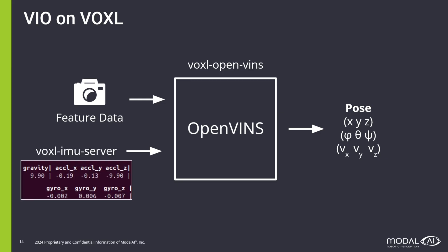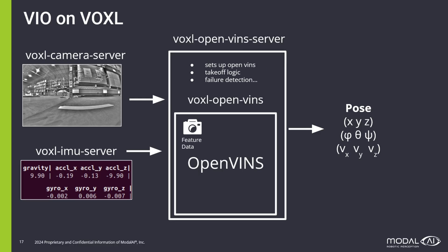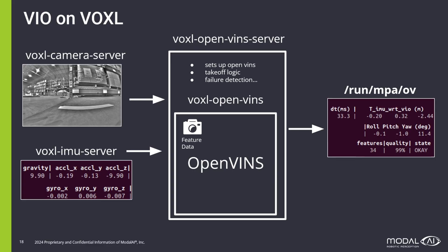IMU data comes from Voxel IMU Server, and feature data is generated within OpenVINS. We feed camera data, which comes from Voxel Camera Server, to OpenVINS, and Voxel OpenVINS lives inside of Voxel OpenVINS Server, which is a wrapper that does setup, takeoff logic, and failure detection. Finally, our pose is output to a Linux pipe that contains position, orientation, and velocity information, as well as some other state data.